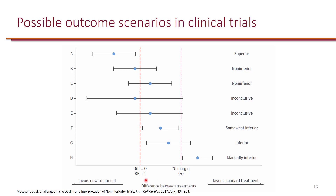We have only discussed superiority so far — that would mean either the intervention is superior to your control group, or the control is superior to the intervention, which would mean that the intervention is inferior to the control group, or there would be no difference. When you look at example A, the confidence interval did not cross the line of no difference, and we call that superiority — the intervention is superior to the control group.